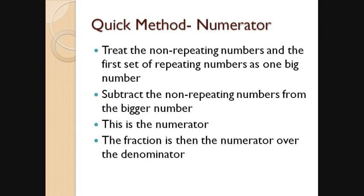The numerator is a little more complicated, so I'll go through that in the example more carefully. Basically, treat your non-repeating numbers and the first set of your repeating numbers as one large number. Then you're going to subtract from that just the smaller numbers of the non-repeating part, which sounds a little weird, but it will make more sense through the example. Then we have our numerator over our denominator, which is our fraction.